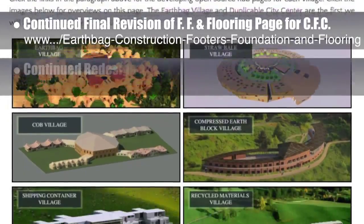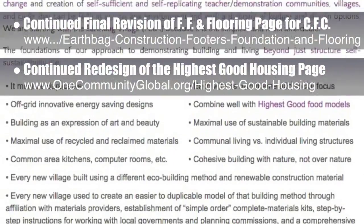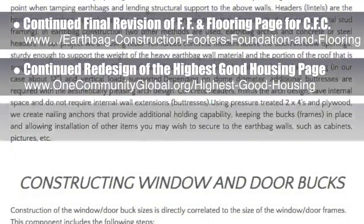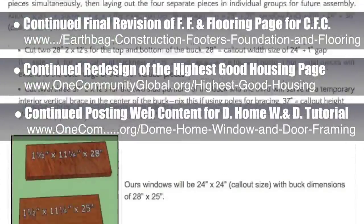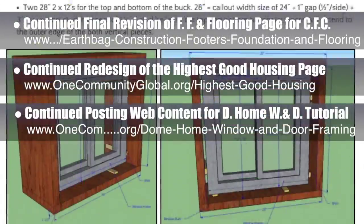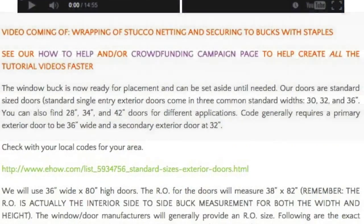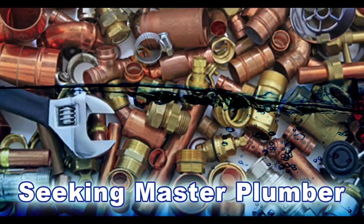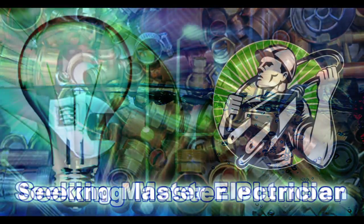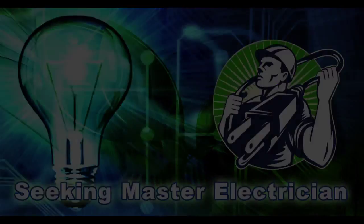We also continued to redesign the Highest Good Housing page to include a quick link image section and more updates to the content of this page. In addition, we began posting the website content for the Dome Home Window and Door Framing Tutorial for the upcoming crowdfunding campaign. What you see here is another 20% of this tutorial update, bringing us to 35% done with this new page creation. In this area of the project, we are seeking a master plumber and a master electrician.